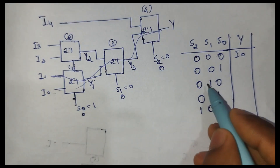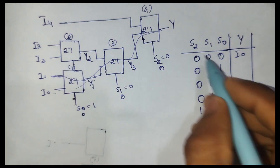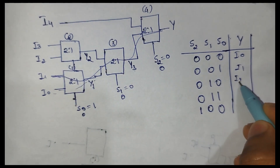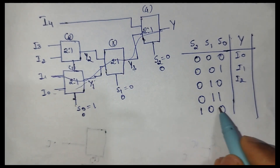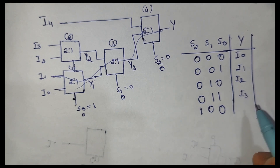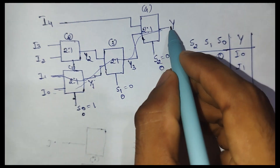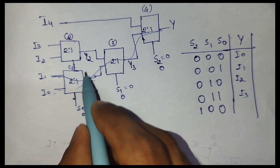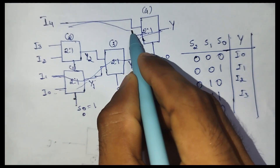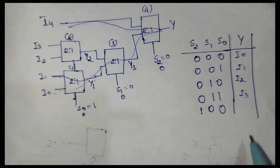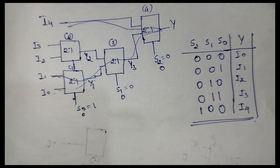Similarly, when the input is 0 1 0 the output is i2. Finally, when s2 s1 s0 is 1 0 0, the output y is connected to i4. This is how we can design a 5-to-1 mux using 2-to-1 muxes. Thanks for watching.